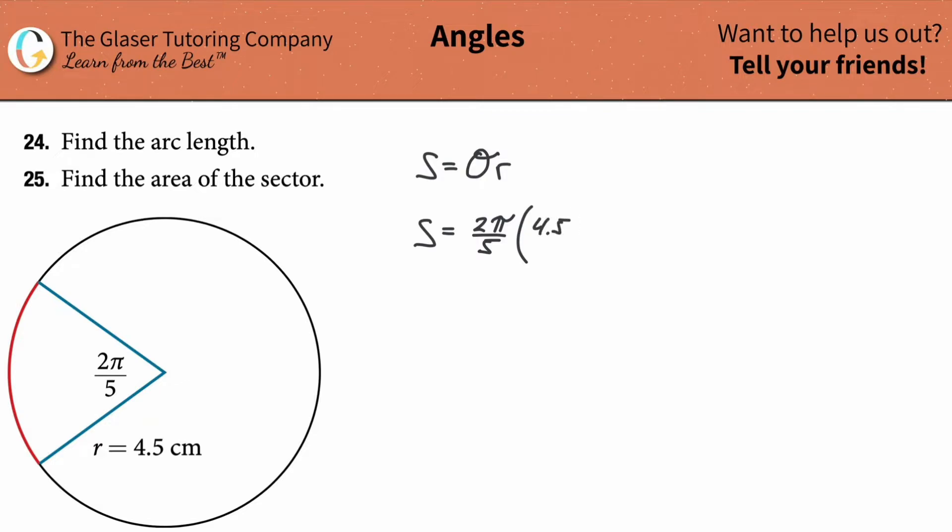So you can take this and multiply it by 4.5. You can convert this into a fraction if you wanted, but you would multiply straight across, two times four point five. Two times four is eight, and then another half of two would be nine. So this is 9/5 π. That's the length of the arc. Remember, pi is a number, so you can plug this into the calculator. Do nine times pi and then divide that by five. When you divide it by five, you get a decimal value of about 5.65.